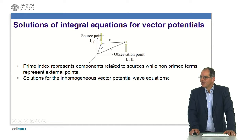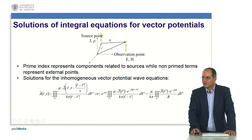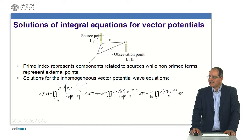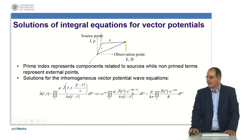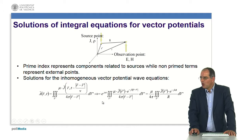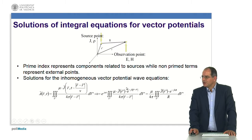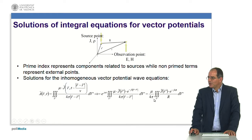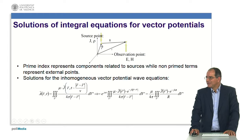The solutions for the homogeneous vector potential wave equations are given by the following expressions. The magnetic vector potential A in the time domain is given by this expression, and if I move to the frequency domain I will have an expression closely related to the 3D Fourier transform of the current feeding the corresponding source point. So the solution of the vector potential is given by the 3D Fourier transform of the corresponding current density at the source point being analyzed.